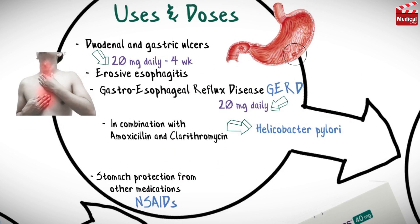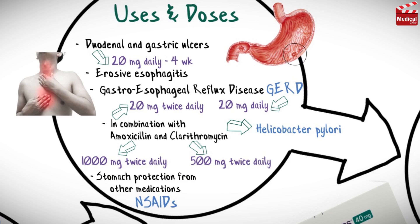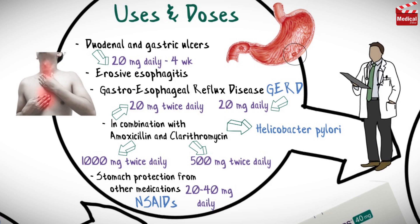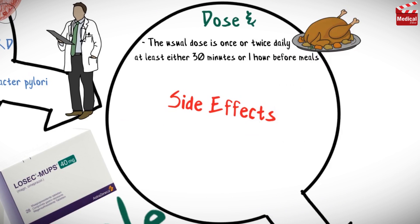The usual dosage for ulcers is about 20 milligrams daily for four weeks. GERD is often treated with 20 milligrams daily. H. pylori is usually treated with 20 milligrams twice a day in combination with amoxicillin 1000 milligrams twice daily and clarithromycin 500 milligrams twice daily. Stomach protection from other medications is usually 20 to 40 milligrams daily. Always ask your healthcare provider to help determine the appropriate dose. The usual timing is once or twice daily, at least 30 minutes to one hour before meals, or once a day at bedtime.